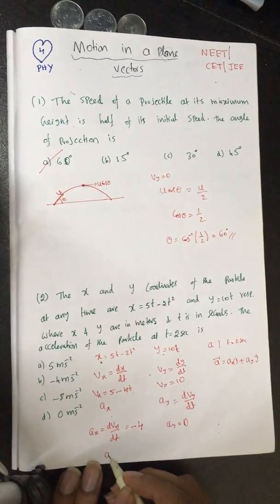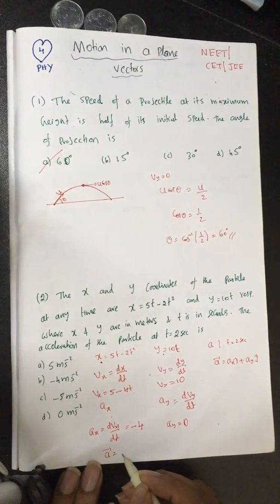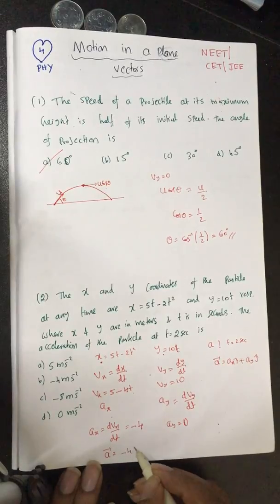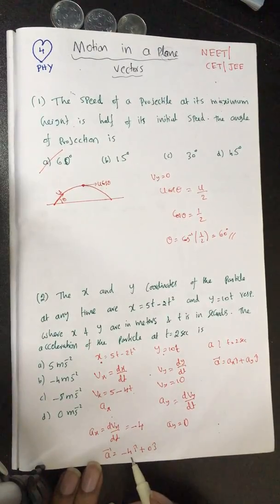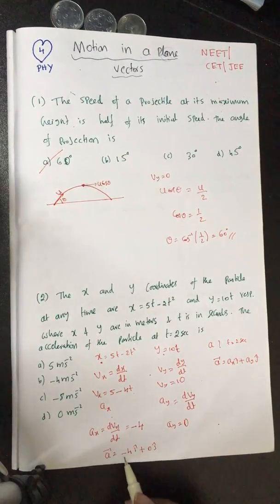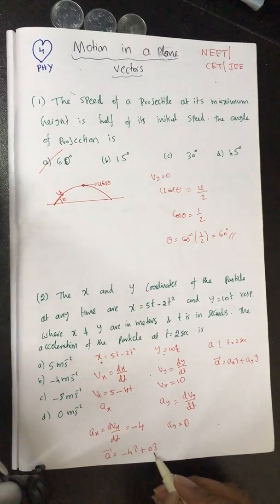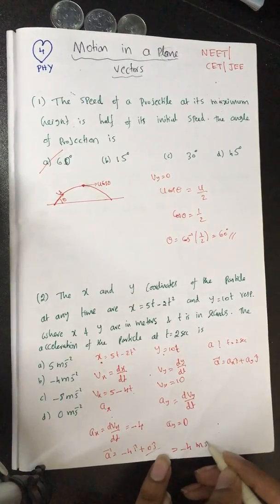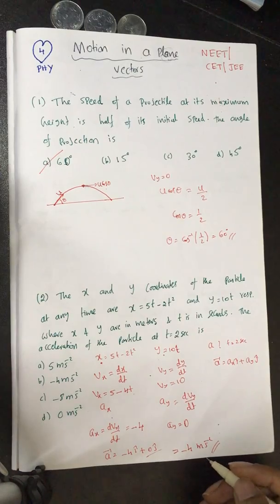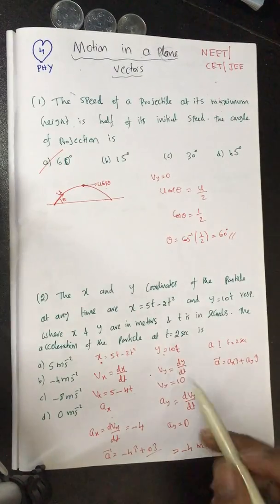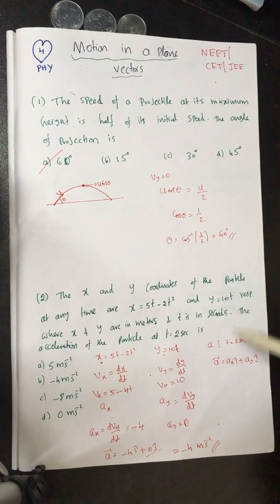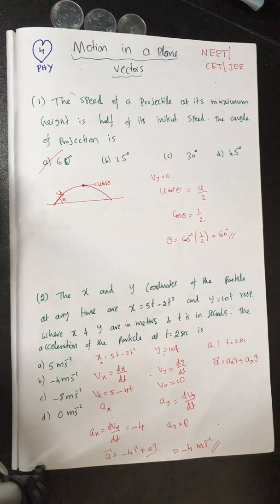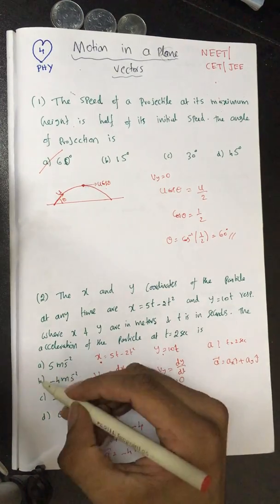So the acceleration vector is a = ax i-cap + ay j-cap = −4 i-cap + 0 j-cap. The magnitude is −4 meter per second squared, since x and y are in meters and time is in seconds. So the answer is −4 m/s².